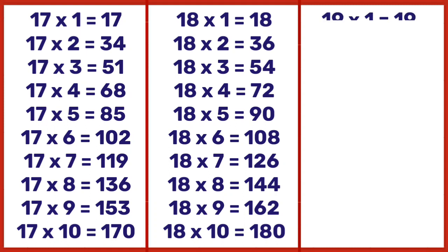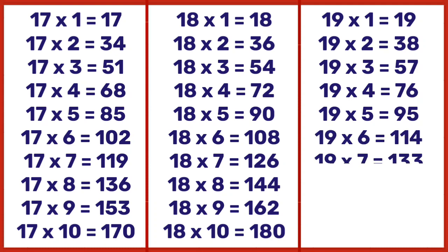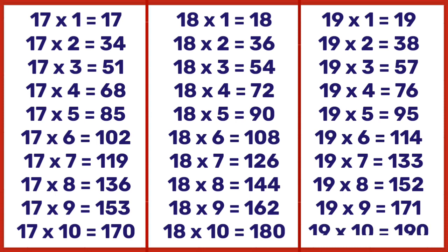19 times 1 is 19, 19 times 2 is 38, 19 times 3 is 57, 19 times 4 is 76, 19 times 5 is 95, 19 times 6 is 114, 19 times 7 is 133, 19 times 8 is 152, 19 times 9 is 171, 19 times 10 is 190.